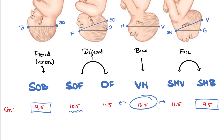That's all for today. Try to answer this one: we have 9.5 cm as the smallest anteroposterior diameter, and both face and vertex presentations have this diameter. Then why is vertex presentation preferred? Comment your answers below.